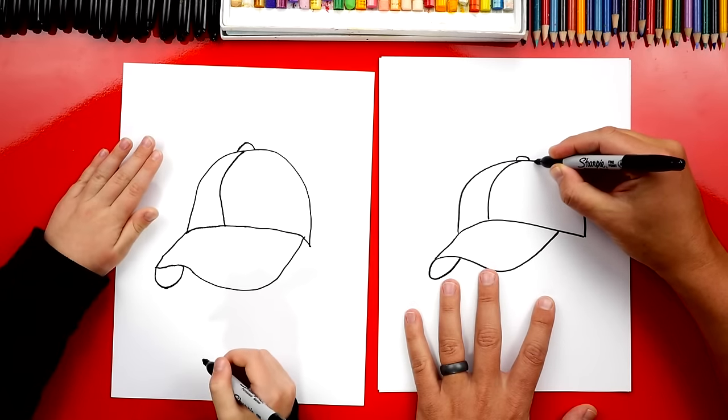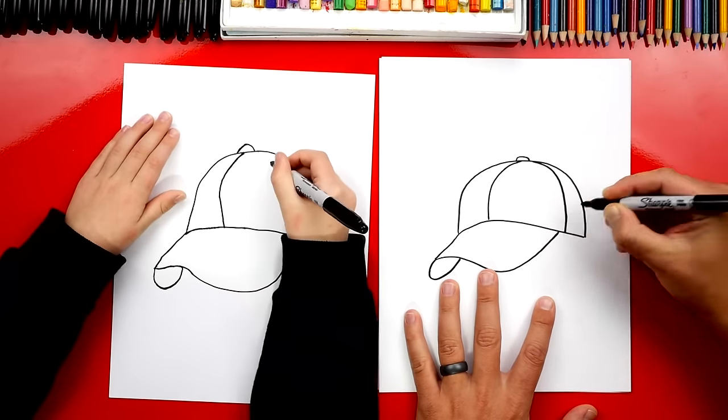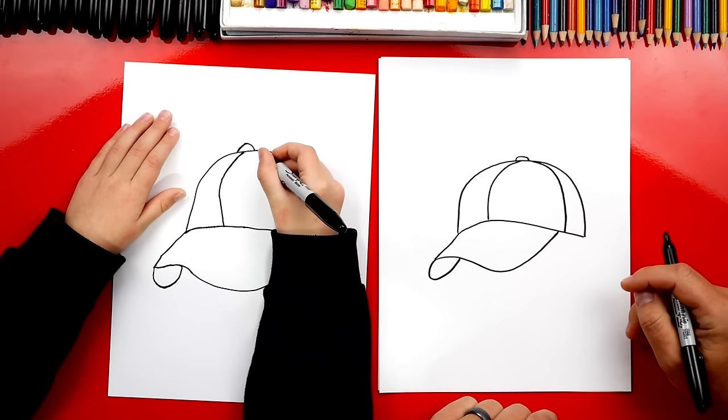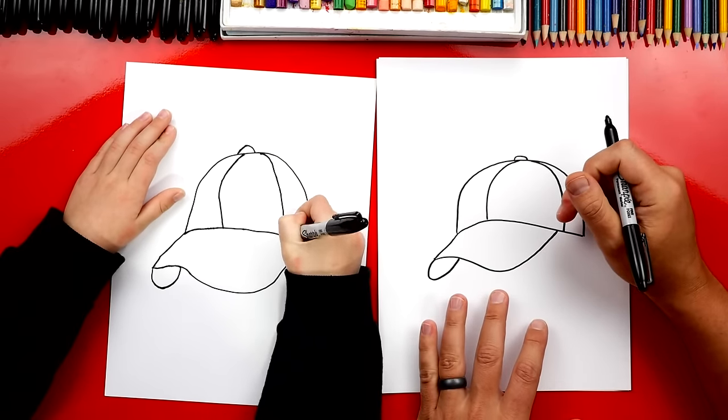And then we're gonna draw another one on the right side. So we're gonna start right here and curve down like this. And it matches the right side. Perfect.